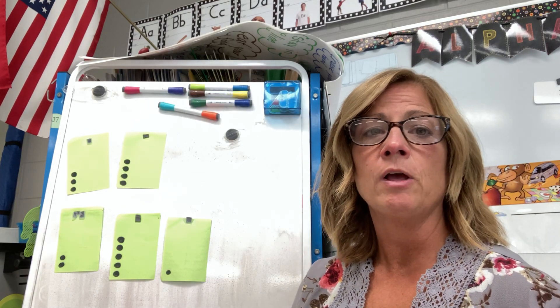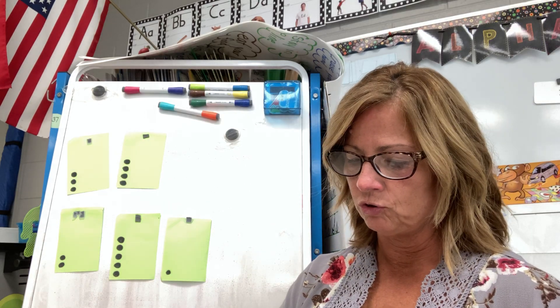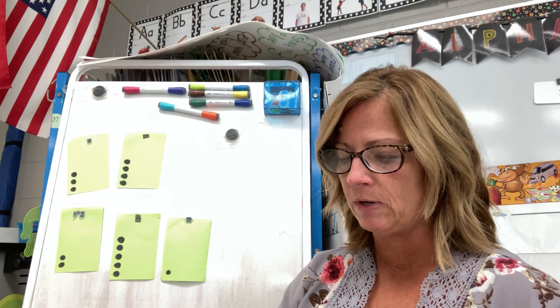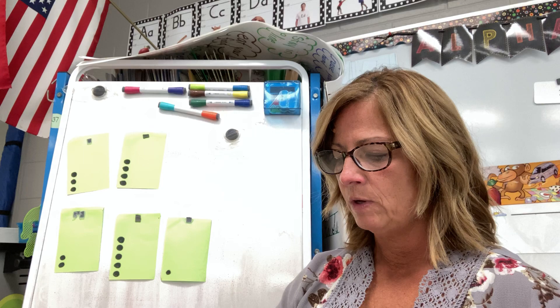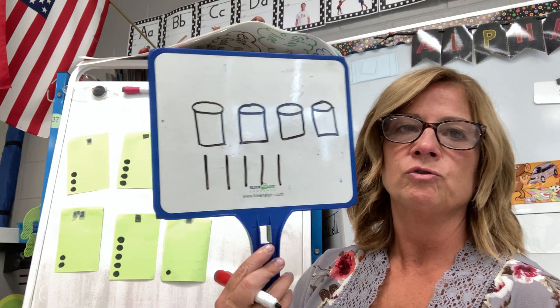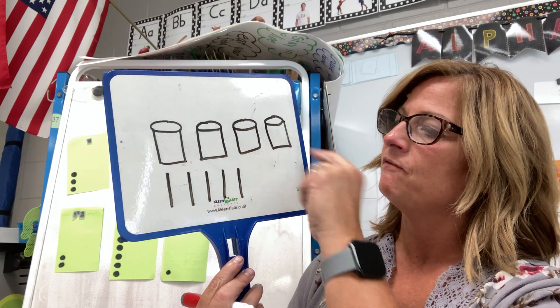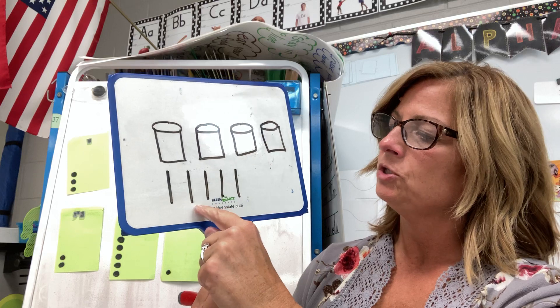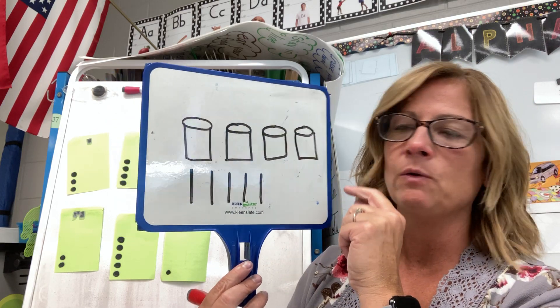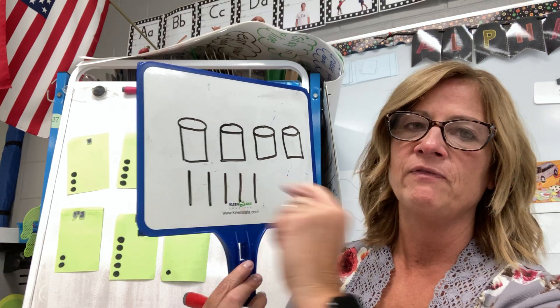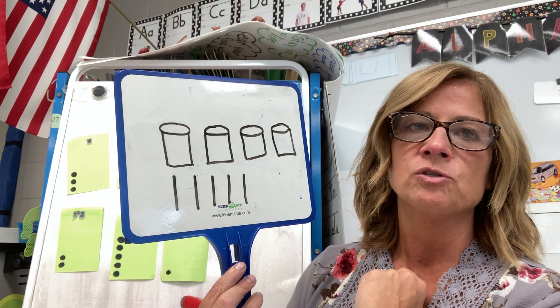It says I need to draw 5 straws. Straws would just be like a stick — you could draw a skinny rectangle or just make lines. So 1, 2, 3, 4, 5 — I just drew lines. I have 1, 2, 3, 4 cups and 1, 2, 3, 4, 5 straws. So I'm going to write the number 4 next to my cups and the number 5 next to my straws.